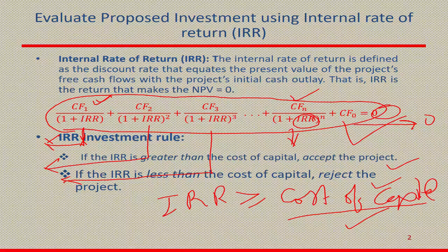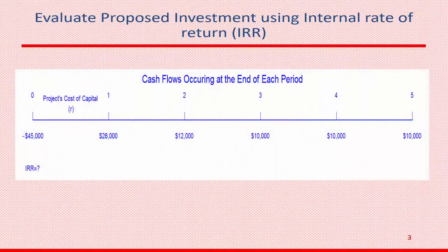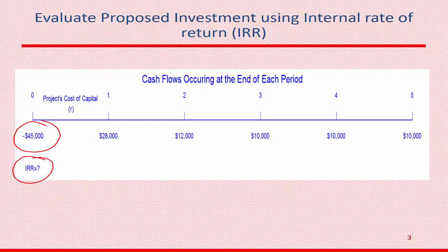Let's try to understand the concept of IRR with the help of an example. The example requires $45,000 of initial investment, and if you make that investment, the project starts to generate cash flows from year 1 to year 5, after which there is no remaining cash flow or project value. The annual cash flows are: $28,000 in year 1, $12,000 in year 2, $10,000 in year 3, $10,000 in year 4, and $10,000 in year 5.